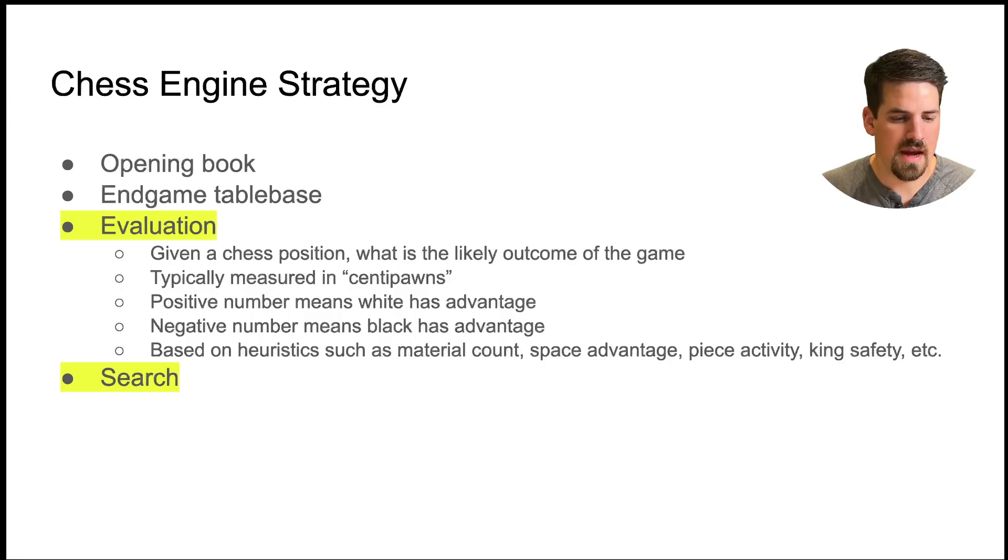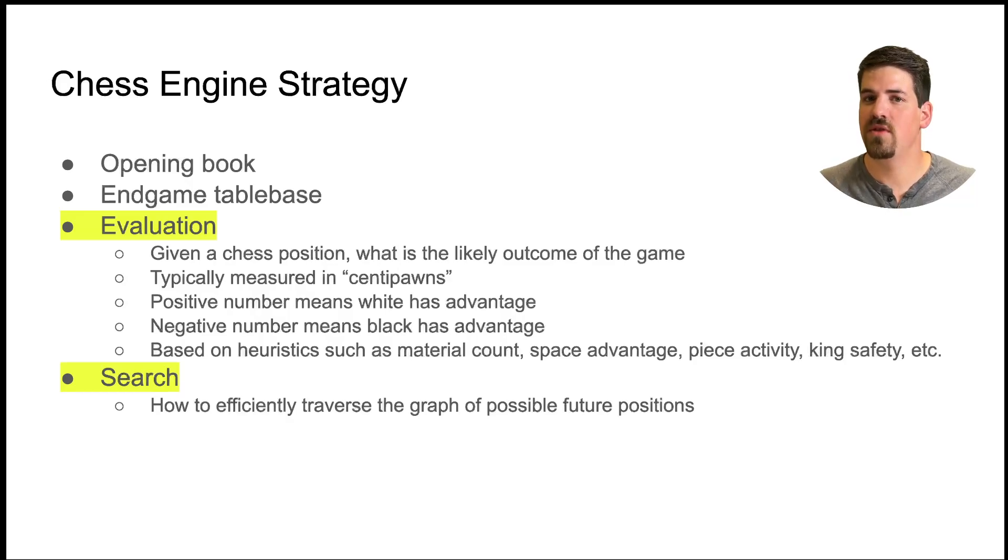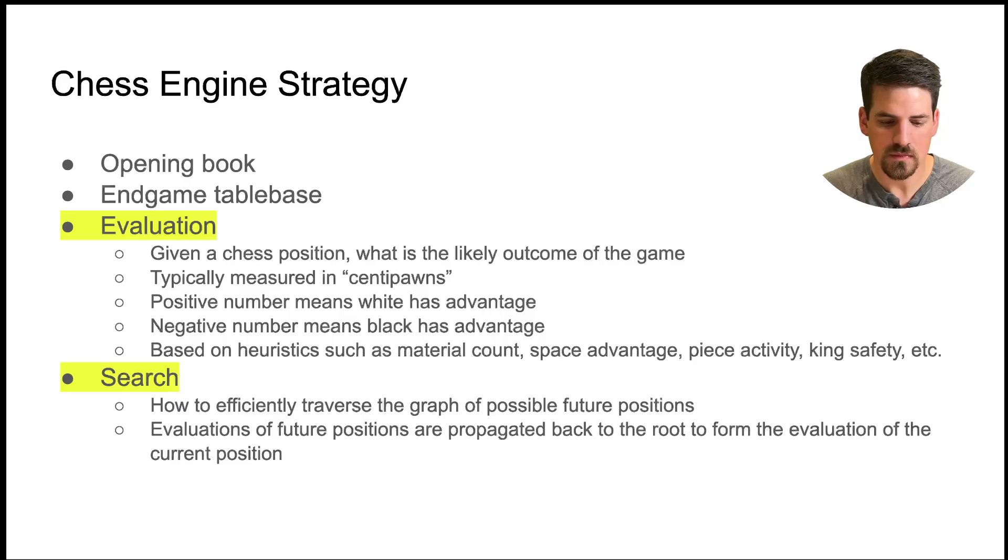The final area of chess engine strategy is search. So in general a chess game can be viewed as a graph where positions are nodes in the graph and moves are edges which lead to different positions. And the goal for a chess engine is to look ahead through this graph and traverse this graph to future positions and evaluate those future positions and decide which move should I play now to lead to a more favorable future position. All those evaluations are propagated back to the current position. So if I look ahead five moves and I see that the best position I can get into has a certain evaluation then I can consider that evaluation to be the evaluation of my current position because I'm leading in that direction.